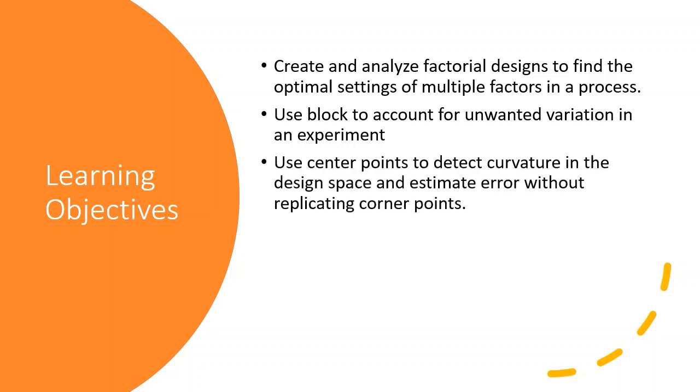We use center points to detect curvature in the design space and estimate error without replicating corner points. In an experiment, the factor settings tell us a lot about the performance of a process at the factor settings we choose. But what happens between those settings?